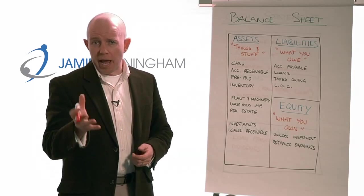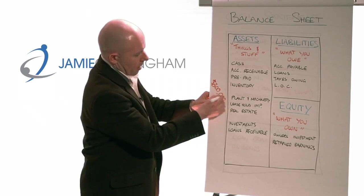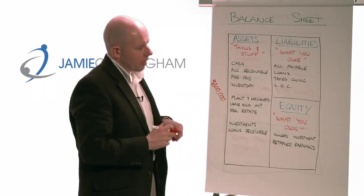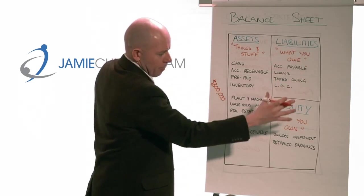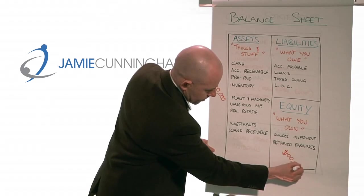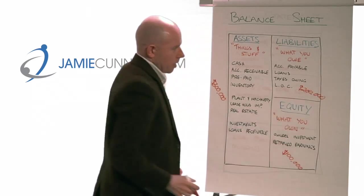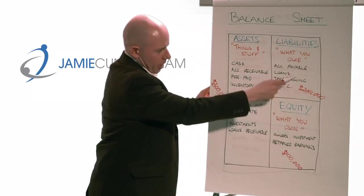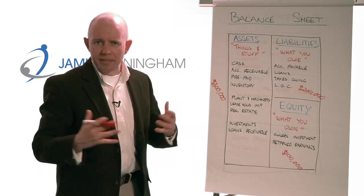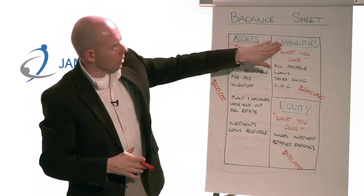If you did a balance sheet for your house — say you paid $300,000 for it — that would go on the asset side. That's how much it's worth. Then you'd work out how much you owe and how much you own. If you put $100,000 down, you'd owe the bank $200,000. So liabilities plus equity equals assets — that's why it's called a balance sheet. The left-hand side of the ledger must equal the right-hand side: assets equals liabilities plus equity.